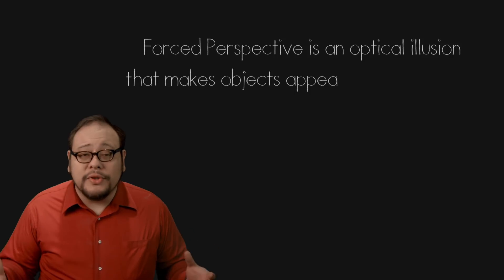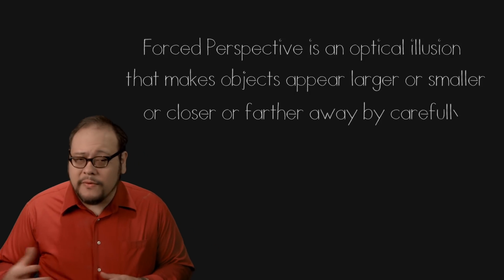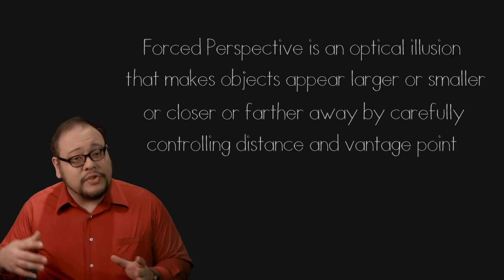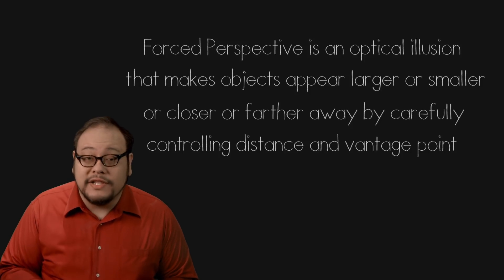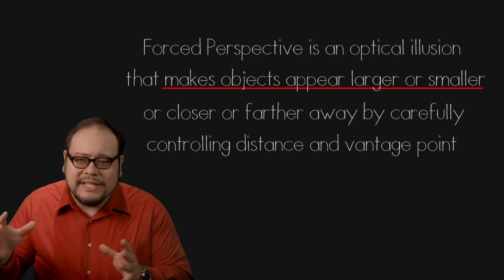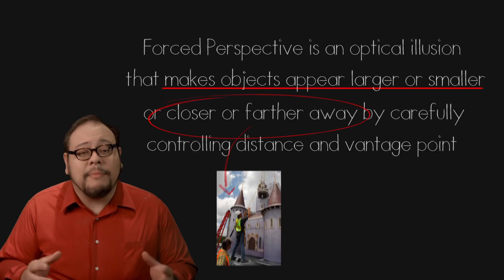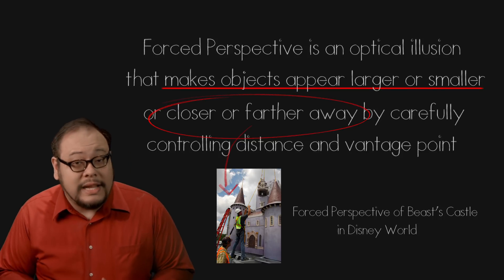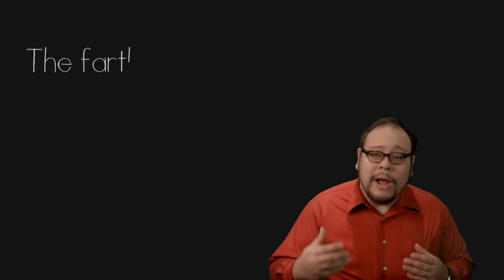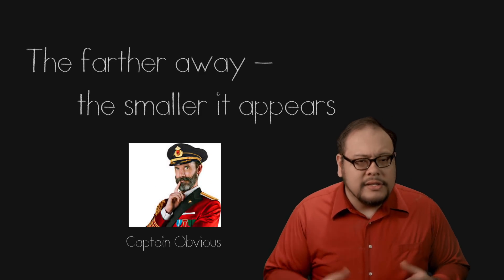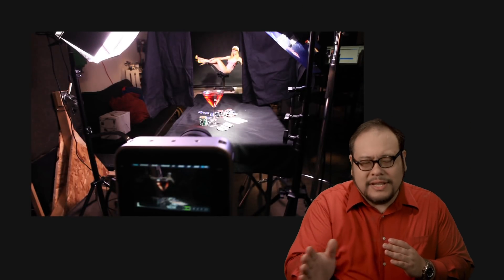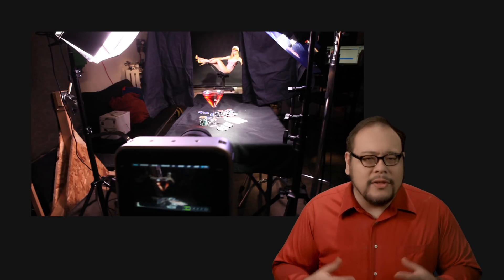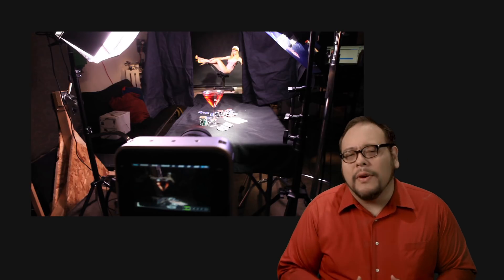Forced perspective is just an optical illusion to make an object appear larger or smaller, or closer or farther than it actually is, by carefully controlling distance and vantage point. Today we'll focus on changing sizes, but forced perspective does have a lot of application in set design. The basic concept is pretty easy to grasp — the farther away something is, the smaller it will appear. So you just have to carefully arrange and align objects at different distances to create the illusion that they are in the same space, even though they're not. But how does this work scientifically?